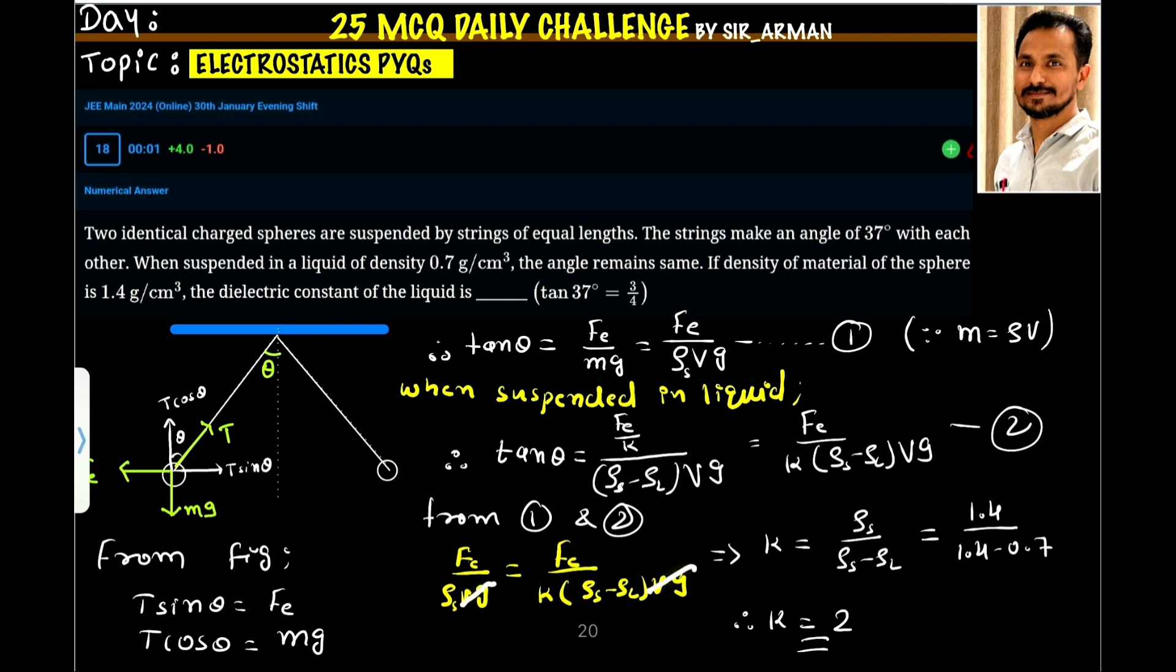vg and vg will get canceled. We make K as the subject. Fe and Fe will get canceled. K equals rho s by rho s minus rho l, where rho s is the density of the sphere and rho l is the density of the liquid. Density of the sphere is 1.4 and this is 0.7, so 1.4 minus 0.7. If you solve this, you will get the value of K is 2, meaning the dielectric constant of the liquid is 2.